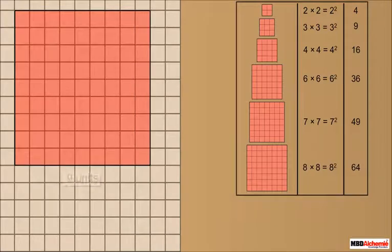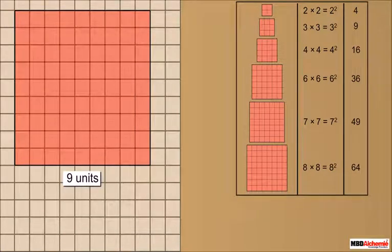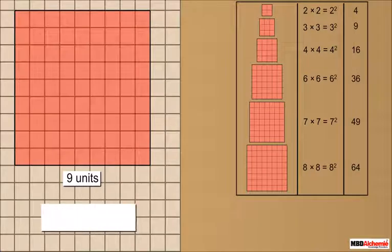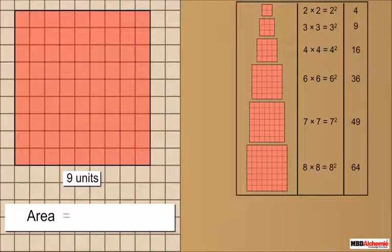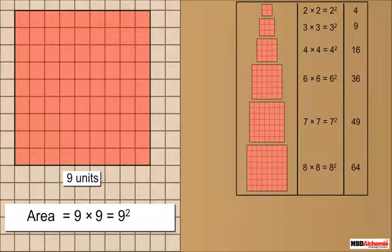Consider a square of side 9 units. It is further divided into 81 unit blocks. The area of this square is 9 into 9, which we write as 9 squared, which is equal to 81.